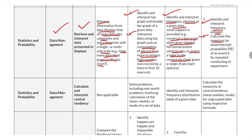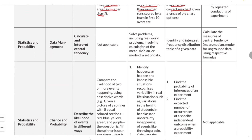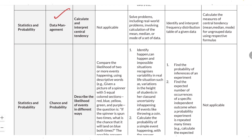You also need to calculate the empirical probability of an event, and calculate and interpret central tendencies. This involves solving problems — including real-life problems — involving calculation of mean, median, and mode; identifying and interpreting frequency distributions; and calculating measures of central tendency.